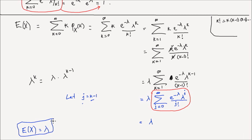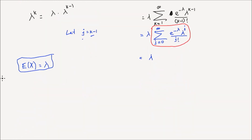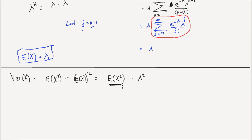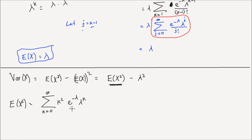Now let's find the variance. The variance of x equals the second moment minus the first moment squared, which is E[X²] minus lambda squared. So if we can find E[X²], we have the variance by subtracting lambda squared. E[X²] is the sum from k equals 0 to infinity of k squared times e to the negative lambda times lambda to the power of k divided by k factorial.